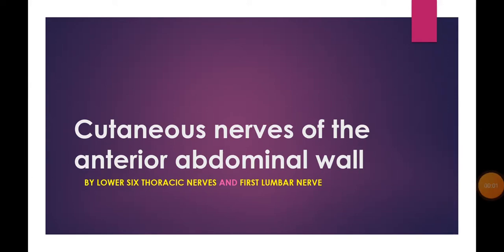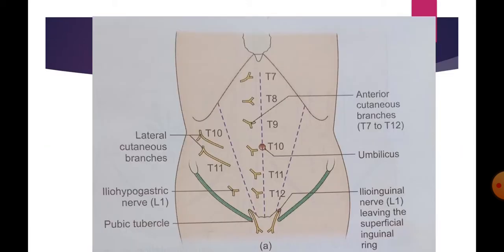Today's video is about cutaneous nerves of the anterior abdominal wall. The skin of the anterior abdominal wall is supplied by the lower sixth thoracic nerves and by the first lumbar nerve. Basically, we have the anterior cutaneous nerves and the lateral cutaneous nerves.